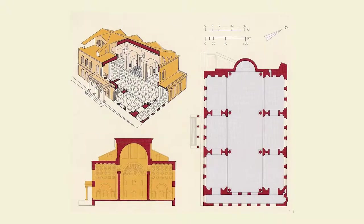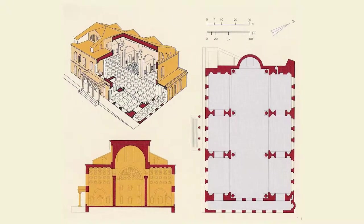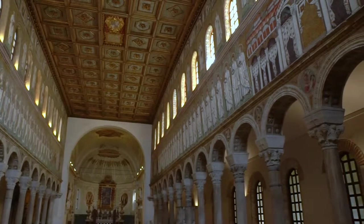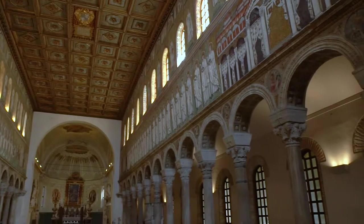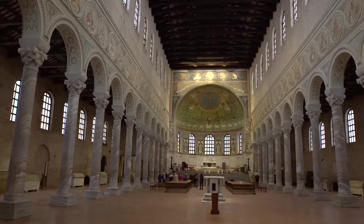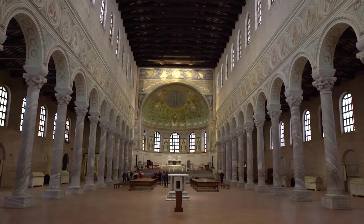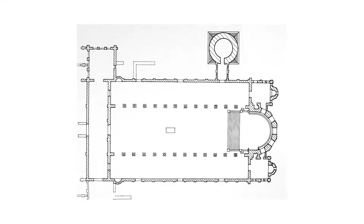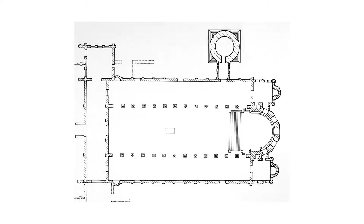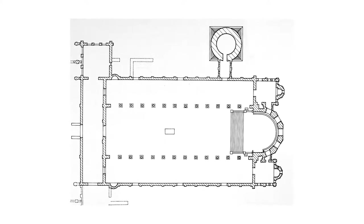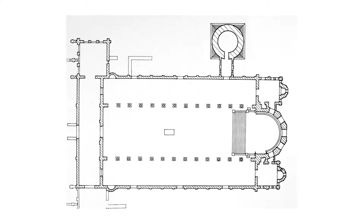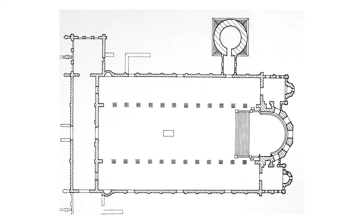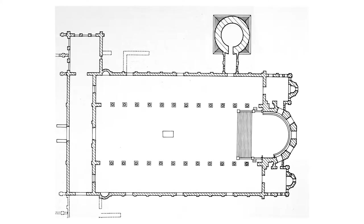The early Christian basilicas in Ravenna generally had a nave with two aisles divided by rows of columns. They received light through round arched windows set in the higher part of the sides of the nave, as in the case of Sant'Apollinare Nuovo and Sant'Apollinare in Classe. In these basilicas, the shape of the apse — semicircular on the inside and polygonal on the outside — is original and directly reflects the influence of eastern architecture, which resulted in the creation of a new style that would become typical of the architecture of Ravenna.